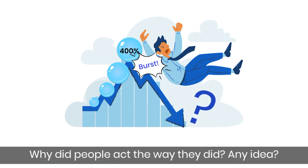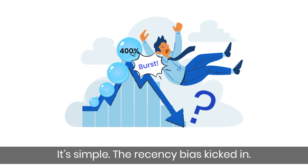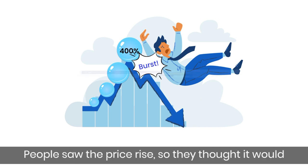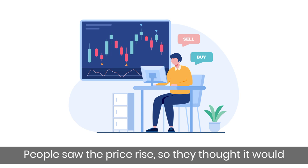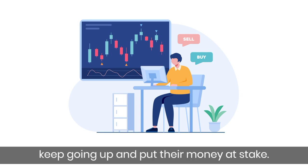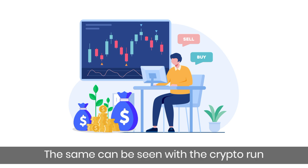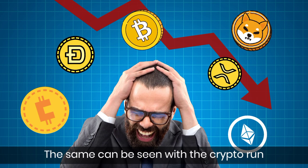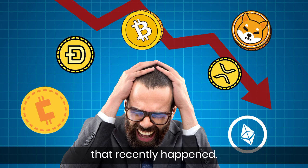Why did people act the way they did? It's simple — the recency bias kicked in. People saw the price rise, so they thought it would keep going up and put their money at stake. The same can be seen with the crypto run that recently happened.